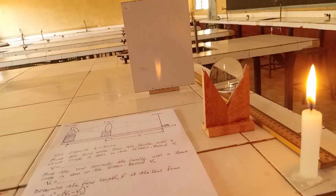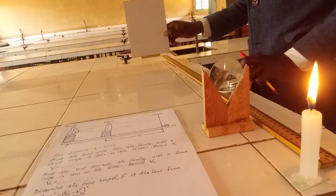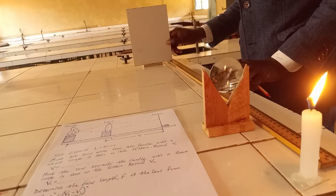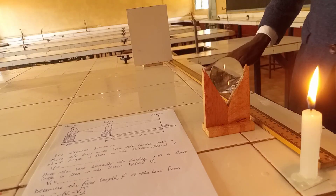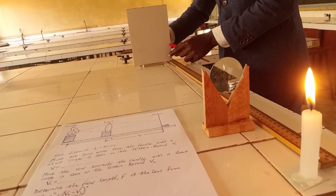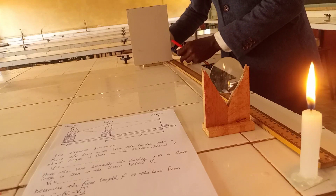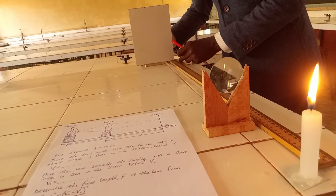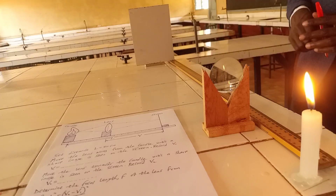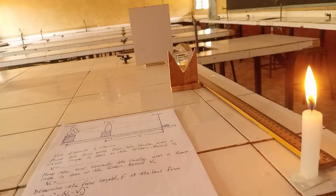Let's start by setting up the distance L being 80, that means we will ensure that the screen is at the 80 cm mark. So that is the 80 cm mark. Once we have that, the lens should be at the middle, that is at 40 cm, so the lens is at 40 cm.